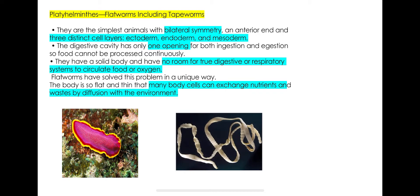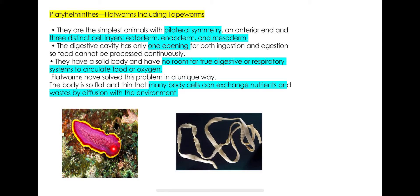The three germ layers are ectoderm, endoderm, and mesoderm. They have only one opening for the digestive cavity. This one opening serves both ingestion — for getting nutrients — and egestion — for getting rid of waste.